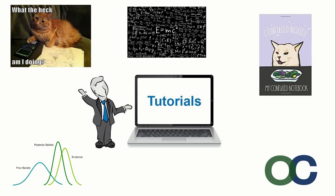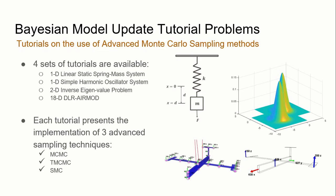I would like to give an introduction to some of the tutorials available on OpenCossan. We have four sets of tutorials of increasing difficulty: a 1D linear static spring-mass system to estimate the spring constant using MCMC, TMCMC, and SMC; a 1D simple harmonic oscillator for dynamic estimation; the 2D inverse eigenvalue problem to observe applicability with a bimodal posterior; and the 18-dimensional DLR AERO-ELAS mock problem to appreciate each algorithm's strength in sampling from a high-dimensional posterior.